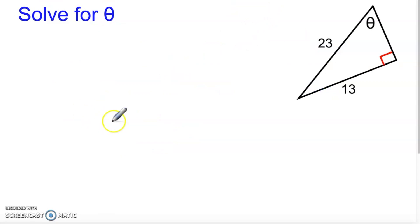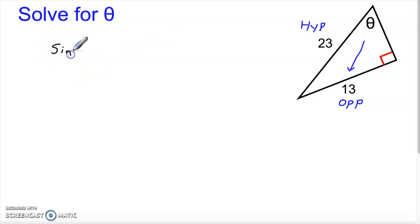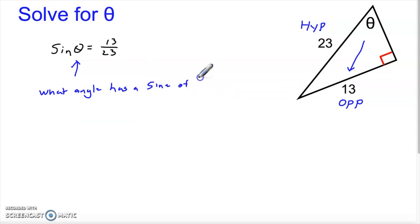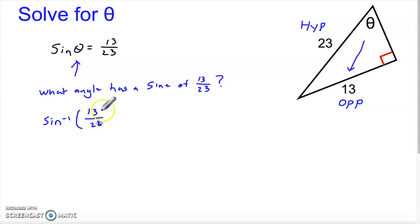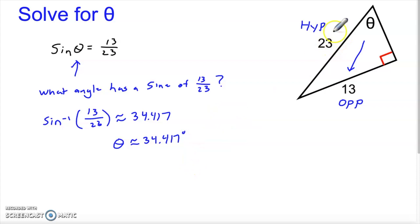Let's do one more example. Theta is up here — across from it is the opposite side, and this is the hypotenuse. Opposite and hypotenuse means we use sine: the sine of theta is 13 over 23. We need theta, so we ask: what angle has a sine of 13 over 23? We put sine inverse into the calculator — hit second, then sine, and type in 13 over 23. The calculator gives approximately 34.417 degrees. Of course, always round appropriately; if the instructions say find theta to the nearest degree, that would be 34 degrees flat. Pay attention to rounding instructions — they love to get you on standardized tests.